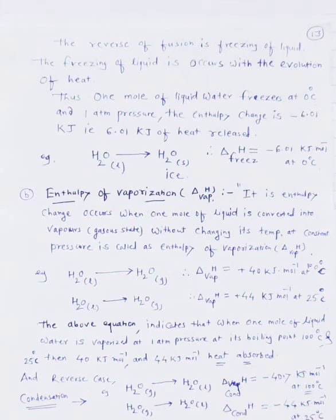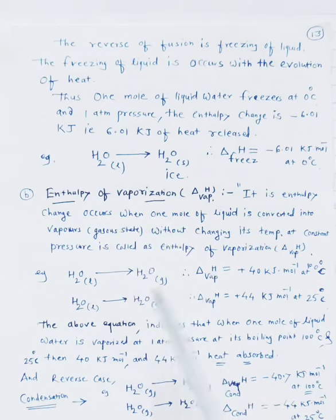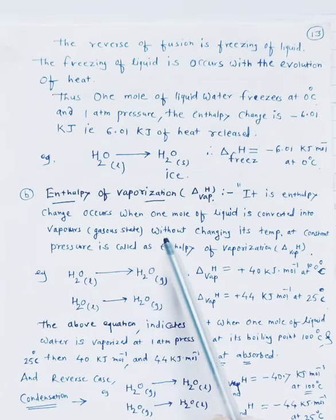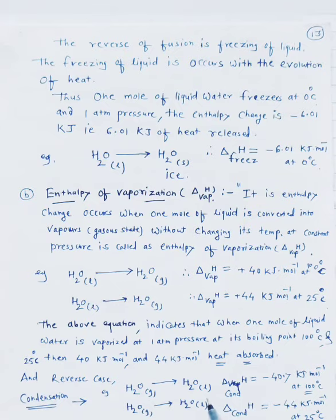When gas state converts into H2O liquid, this is called condensation. The condensation has delta H of minus 44 kJ per mole at 25 degrees Celsius. Enthalpy of vaporization is the enthalpy change when liquid converts into gas state, and the reverse — gas to liquid — is called condensation.